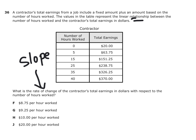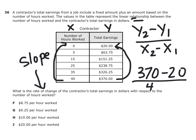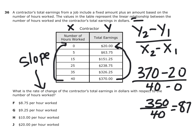If these are the x's and these are the y's, you can subtract any y values. Using the formula y2 minus y1 over x2 minus x1, I'm going to take 370 minus 20 and divide that by 40 minus 0. So 370 minus 20 is 350, divided by 40. That means in 40 hours he makes 350. If you divide 350 by 40 using your calculator, you get 8.75. So 8.75 is the answer, and it looks like answer F.